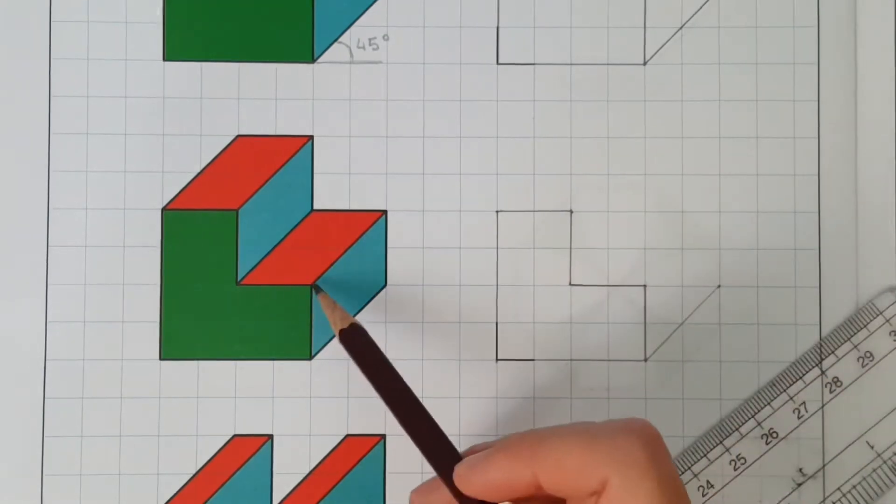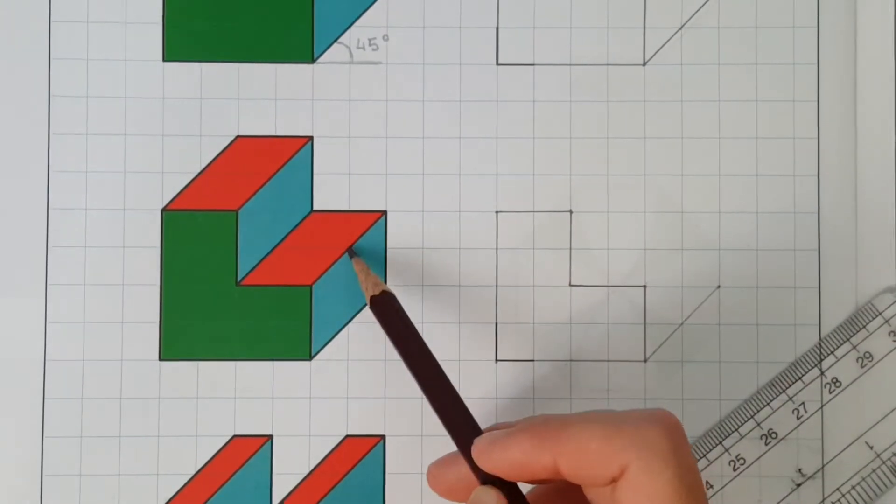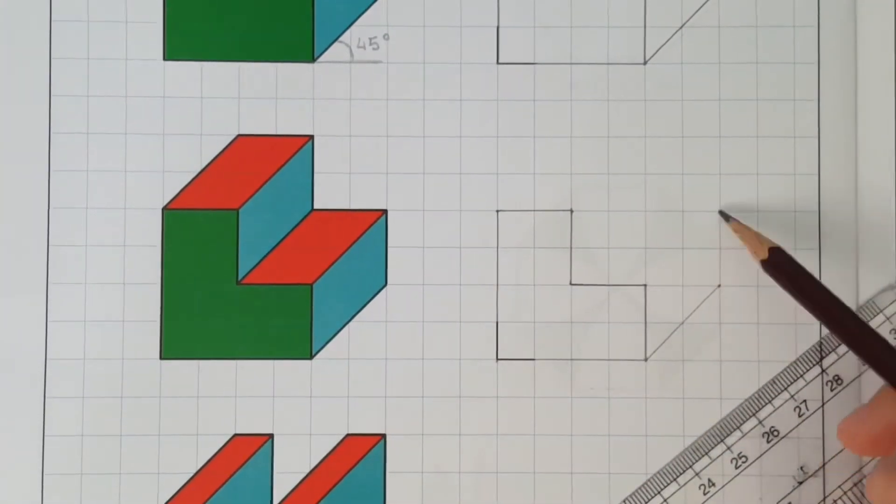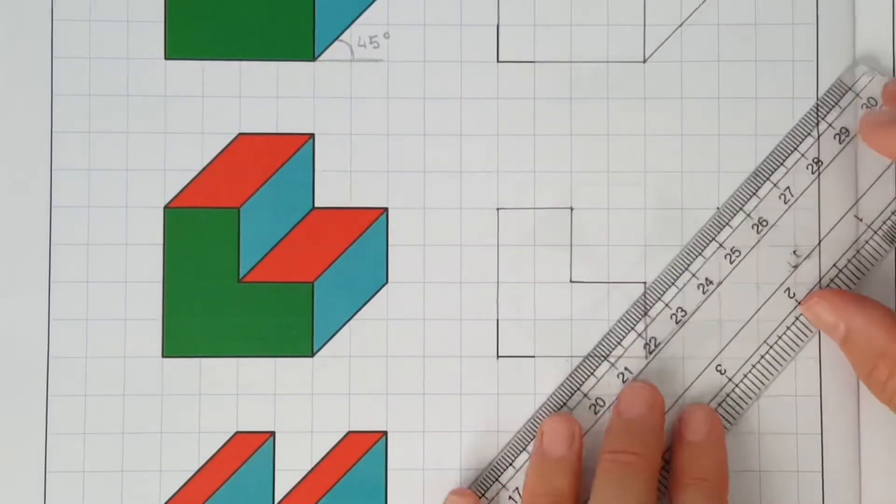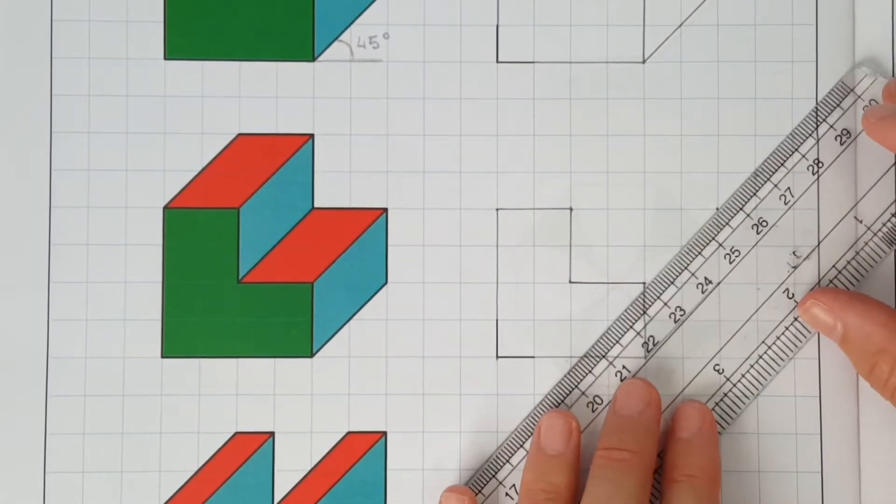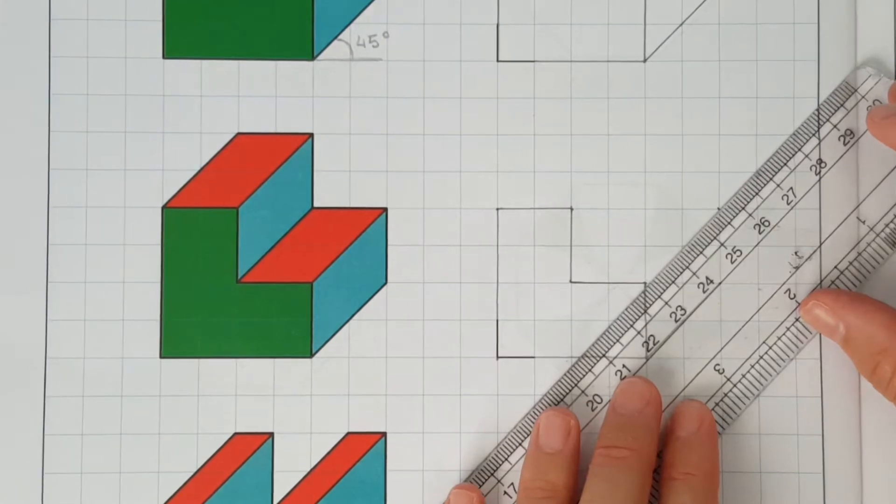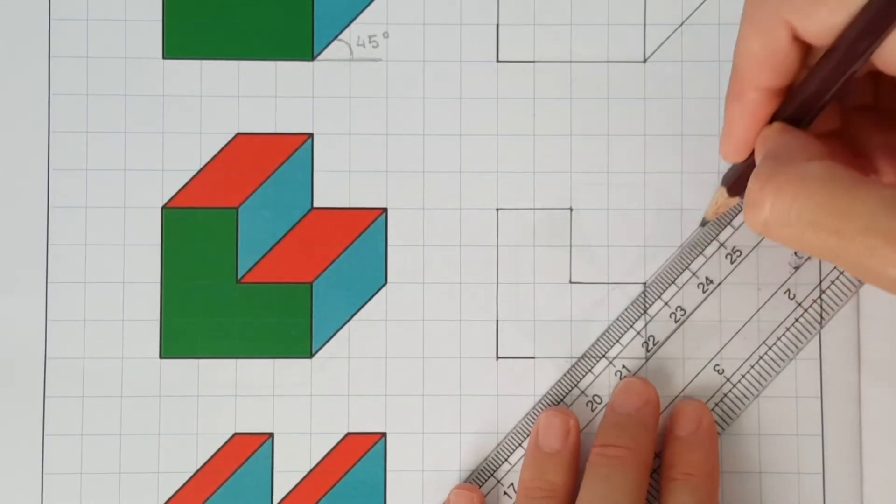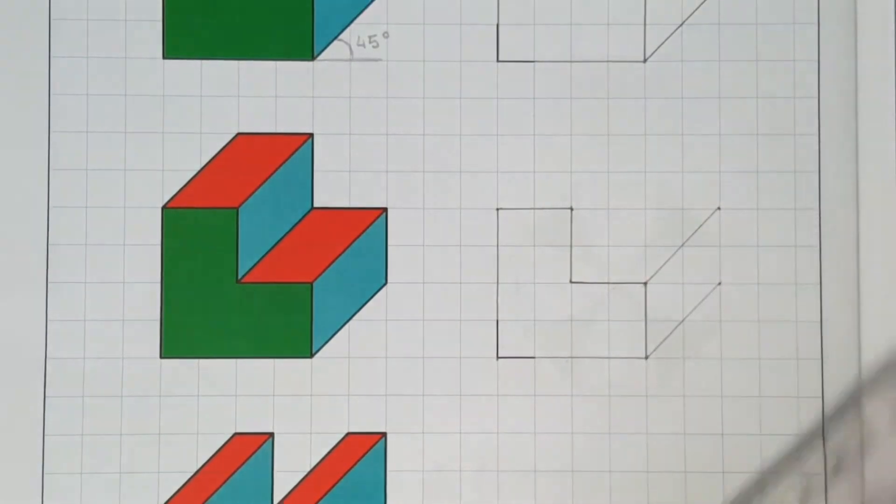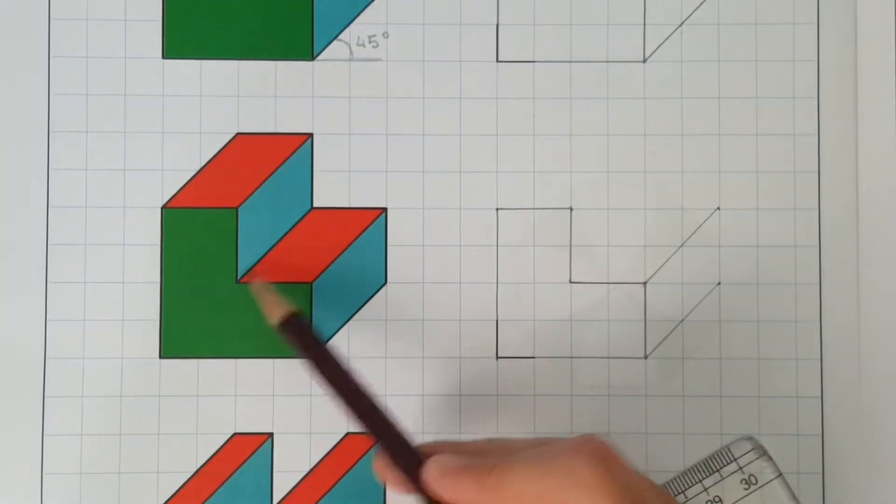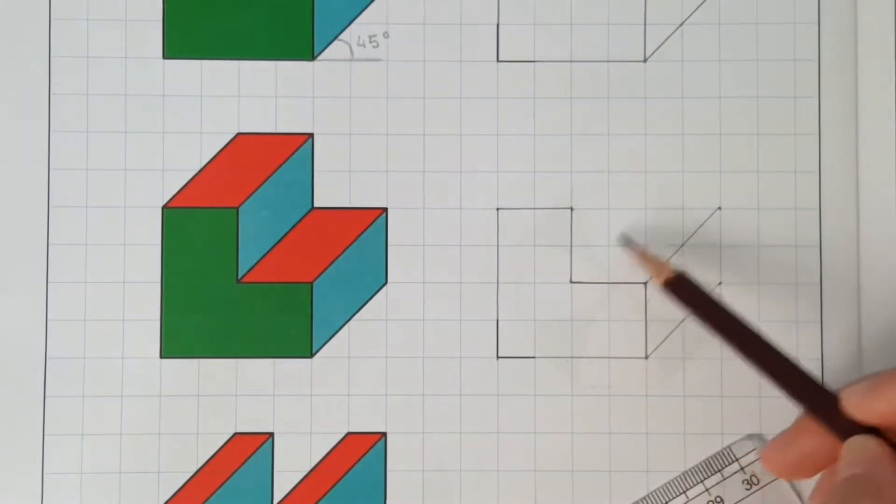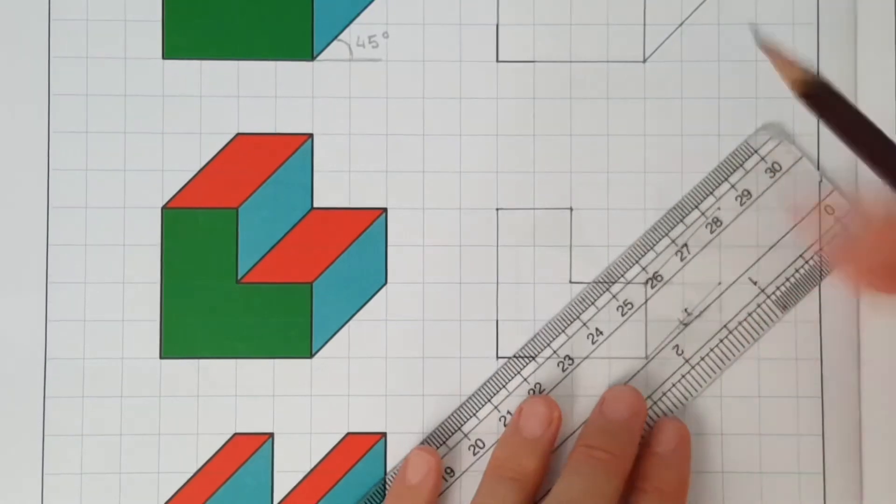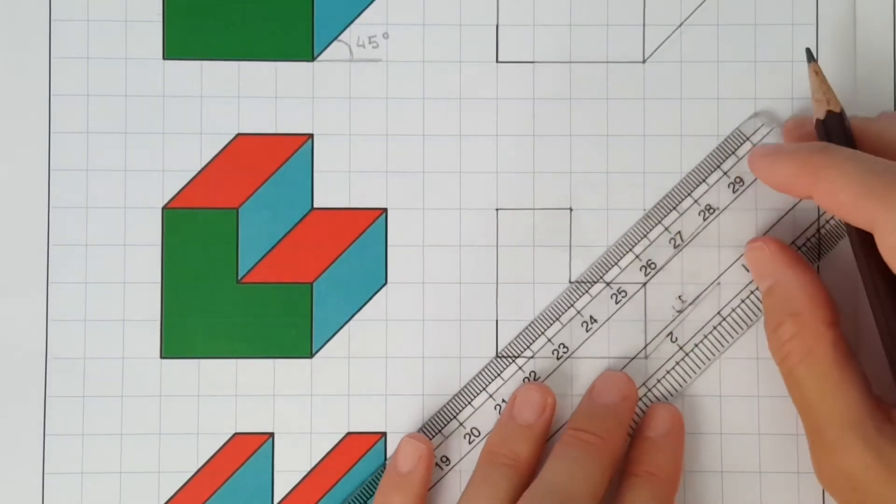Let's do the same with the other corners. So from this corner, once again, 2 squares to the right. The thickness of this shape is always going to be 2 squares. So in each and every corner that you have on your L shape, make sure to always move 2 squares to the upper right.